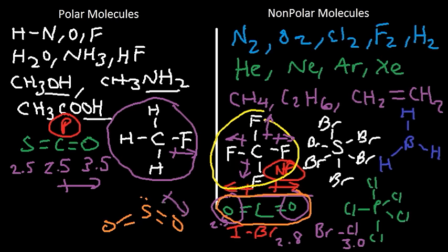But because sulfur dioxide has a bent shape, the arrows, the dipole moments, they don't cancel. And you can see, because of the lone pair, this molecule lacks symmetry. So that also makes it polar.